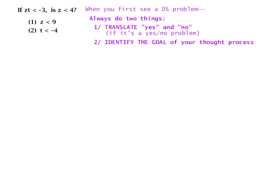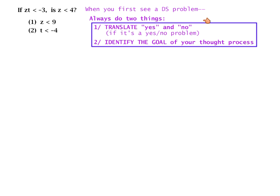What I mean by translate: for yes/no problems, translate into specifics because yes and no are not really goals — they're not things that are in the problem. You can't do a bunch of mathematical work and then suddenly have the word 'yes' or 'no' pop out. What you want to deal with instead are concrete things you can accomplish or find or not find. So translate: the question here is, is z greater than four, or is z less than four?